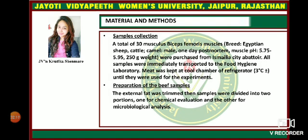Materials and methods — Sample collection: A total of 30 musculoskeletal biceps femoris muscles from sheep, cattle, and camel — male, one day post-mortem, having a pH of 5.75 to 5.95 — and 250 gram weight were purchased from Islamia city abattoir. All samples were immediately transported to the food hygiene laboratory and kept in a cold chamber refrigerator until used for the experiment.